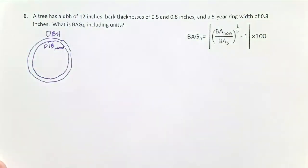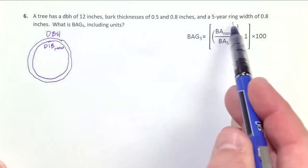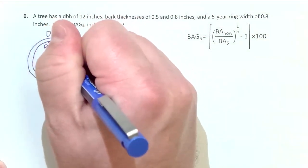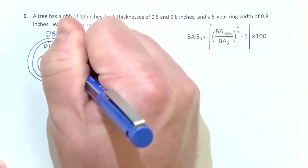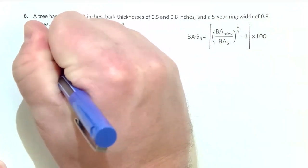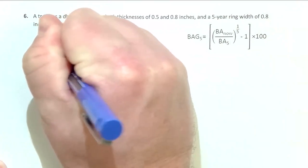Then we increment core the tree. In this particular problem, we're looking at a five-year basal area growth rate. So we increment core the tree and measure the distance of the last five rings. That's going to give us an inner circle. I'm not drawing these to scale, just giving you the concept. That's going to be the diameter inside the bark five years ago.